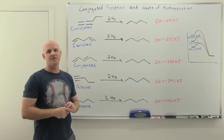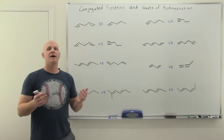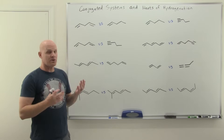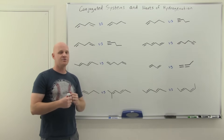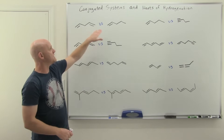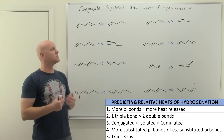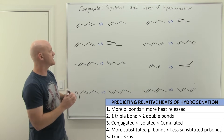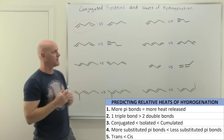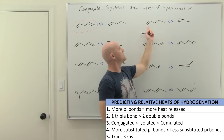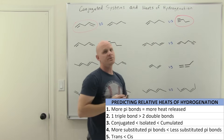Now let's look at examples comparing heats of hydrogenation. In the first two pairs, we have two pi bonds versus one pi bond — reducing two definitely releases more energy, so higher heat of hydrogenation. In the next pair, we're comparing an alkene versus an alkyne — again one pi bond versus two — so reducing the alkyne releases more energy.